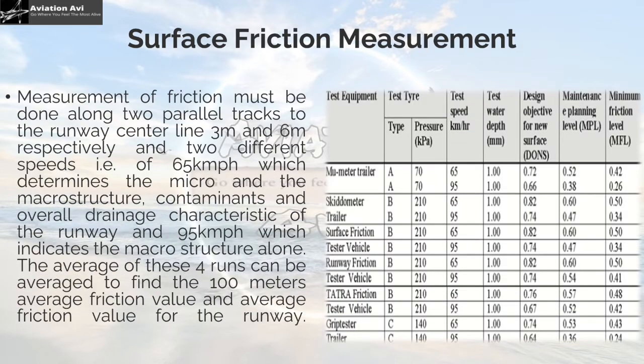Measurement of friction must be done along two parallel tracks to the runway centerline — 3 meters and 6 meters respectively — and at two different speeds: 65 km/h, which determines the microstructure, contaminants, and overall drainage characteristics of the runway. The average of these four runs can be used to find the 100-meter average friction value and the average friction value of the whole runway.